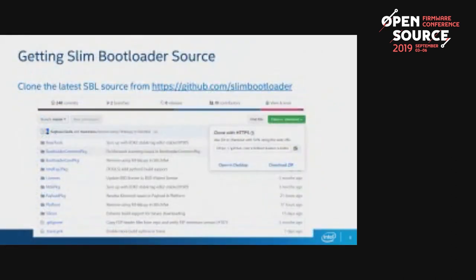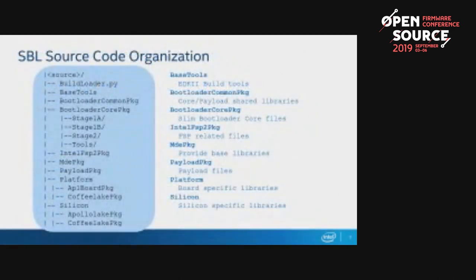Where do you get the source? My colleague Shen showed the link earlier. Go to the GitHub page, click clone or download, use git clone, and you'll get the source very quickly. When you clone the Slim Bootloader source, it's pretty simple — small, simple, and highly flexible. The structure mimics the boot flow, with stage 1a, 1b, and 2 visible in the bootloader core packages.